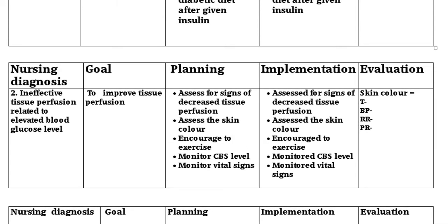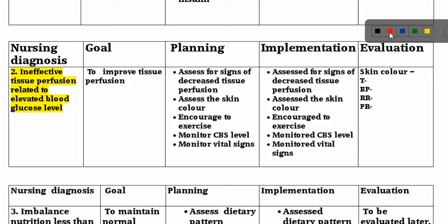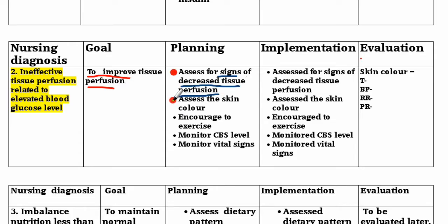Nursing Diagnosis No. 2: Ineffective tissue perfusion related to elevated blood glucose level. Goal: to improve tissue perfusion. Planning: assess for signs of decreased tissue perfusion, assess the skin color, encourage the patient to exercise, monitor blood glucose level, and monitor vital signs.